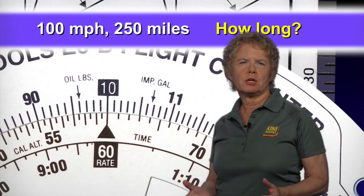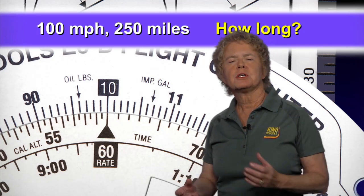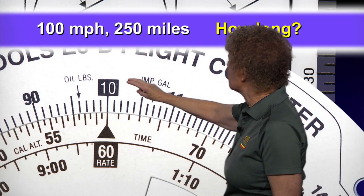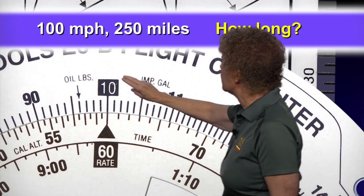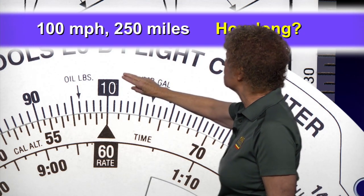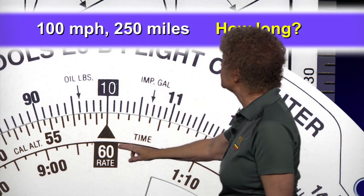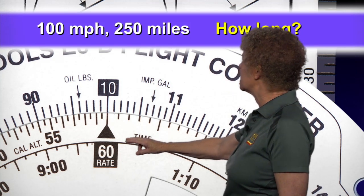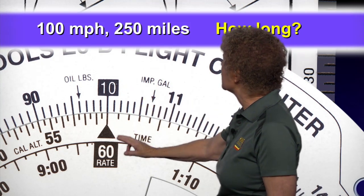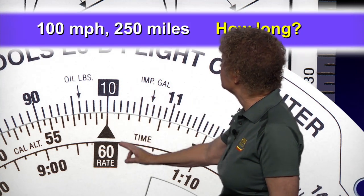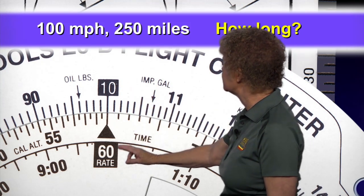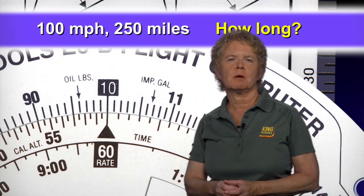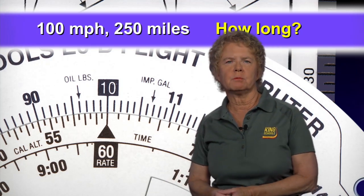We're setting up the ratio that says how fast we're traveling. The 10 representing 100 miles is next to the 60 minutes on the inside scale — 100 miles an hour, or 100 miles in 60 minutes. Now we've got our ratio set up on the flight computer.